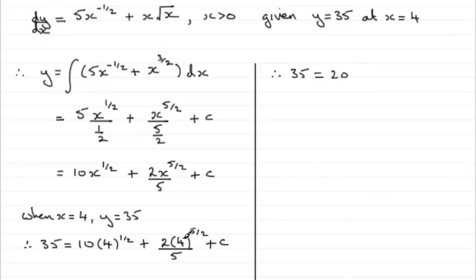And then 4 to the power 5 over 2, take the square root of 4, that's because this is to the half here, square root of 4 which is 2, raise it to the power 5. 2 to the power 5 is 32, times it by the 2, and you've got 64. 64 then over 5, 64 fifths plus c.